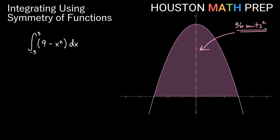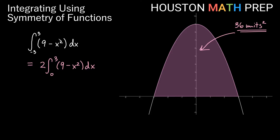If we hadn't already calculated the integral from 0 to 3, another way to compute the integral from negative 3 to 3 is to take one half of it and multiply by 2. So this definite integral equals the integral from 0 to 3 of 9 minus x squared dx, multiplied by 2. When you notice symmetry — two equal halves — you can take just one half and multiply by 2.